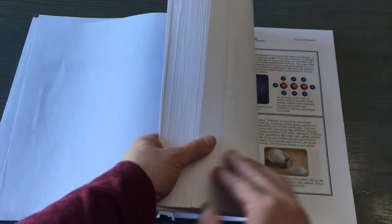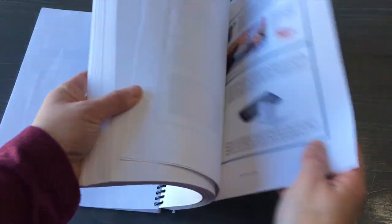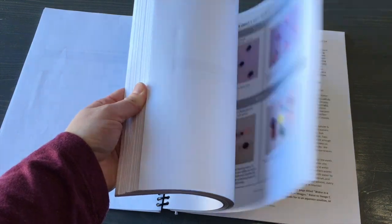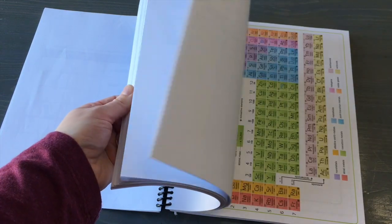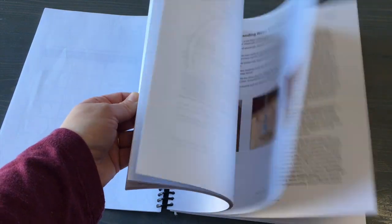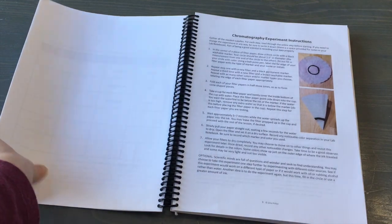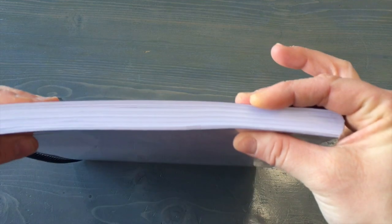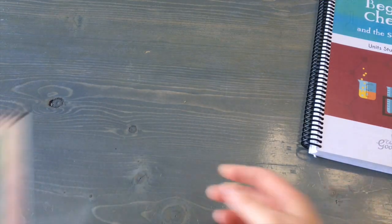I'll just give you a quick flip through. These are the extra element information at the back, the featured elements of what it looks like. That's what the book looks like. It is quite a thick book.